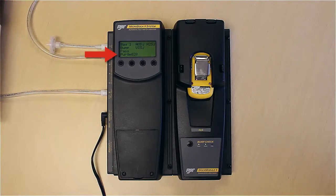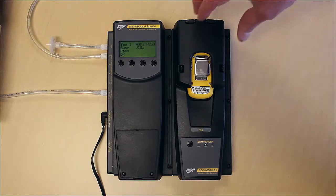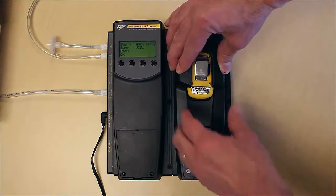Wait until the purge countdown completes and then remove the detector. Squeeze the release tabs, open the lid and remove the detector.